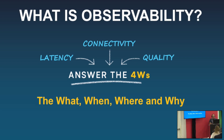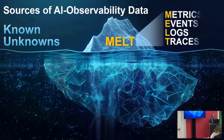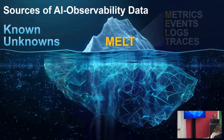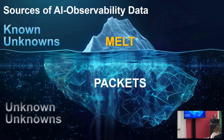Generally speaking, there are multiple sources for observability. There is what many people deal with, which is referred to as MELT — metrics, events, logs, traces. And the other one that cPacket has been dealing with for many years are packets and packet data.